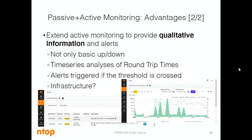In this way, we provide qualitative information about the network, the hosts, and so on. And not only basic up and down status, but we even provide time series analysis of round trip times. Whenever a threshold is crossed, we trigger an alert. In this way, a user can understand if there is some problem inside the network.